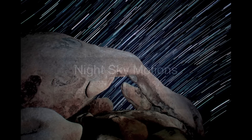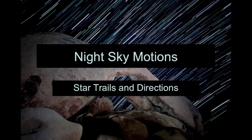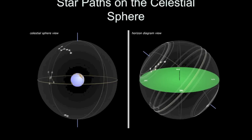In this lecture, I'm going to get you prepared for the motions lecture tutorial. We're going to talk about how things in the night sky appear to change over the course of a day or night. We'll be talking about star trails and the directions that those star trails appear. First of all, let's talk about the celestial sphere and how you can compare that to a horizon diagram view.